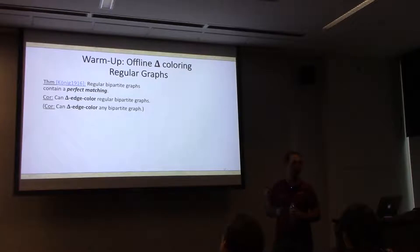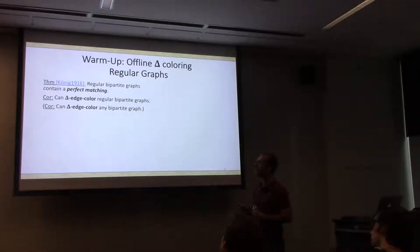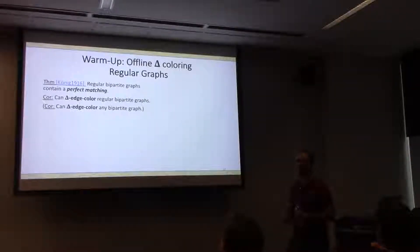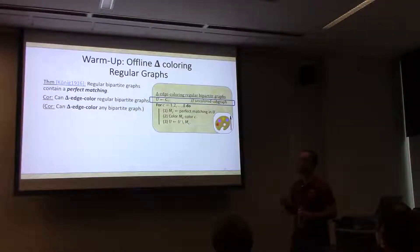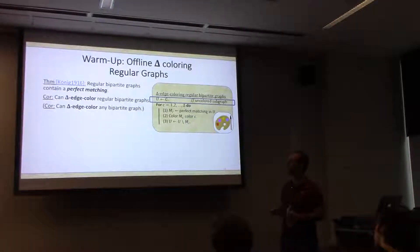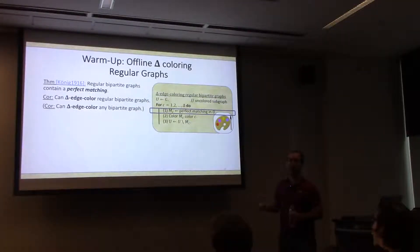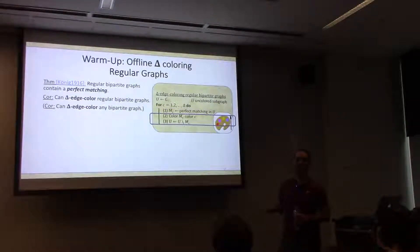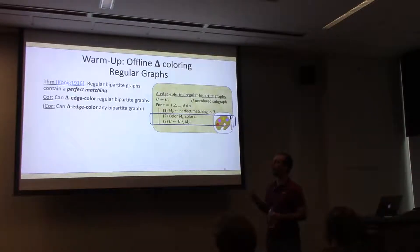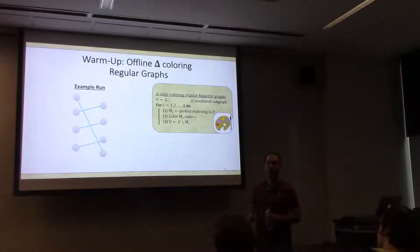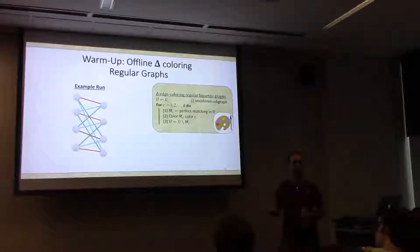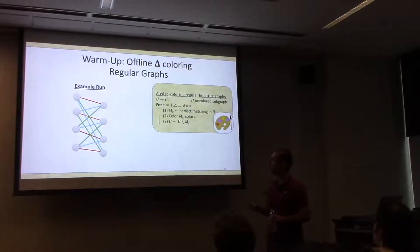Here's an algorithm for delta edge coloring delta-regular bipartite graphs. Initialize U to be the entire uncolored graph. For delta iterations: compute the perfect matching in the uncolored graph, color it, and remove it. Since the perfect matching touches everyone, everyone's degree decreases by one, and by the end we have nothing left. Pictorially: compute the red matching, remove it; compute the green matching, remove it; and so on.